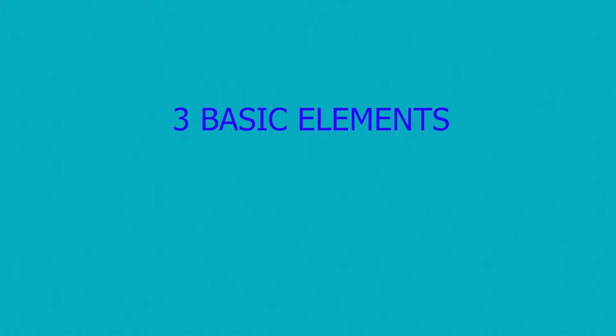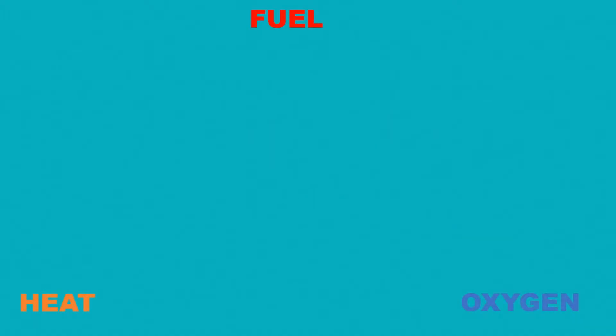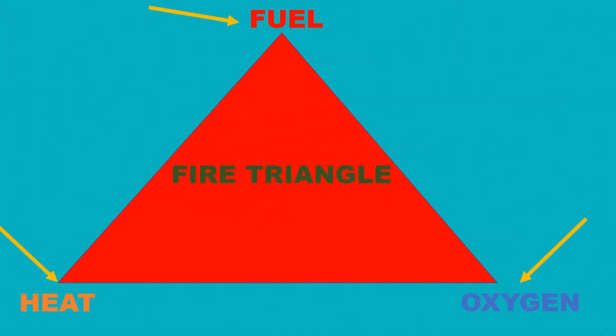For a fire to occur, three basic elements must be present in proper proportion. These elements are fuel, heat and oxygen, combinedly known as the fire triangle. The fire will go out if we take away any element of the triangle.